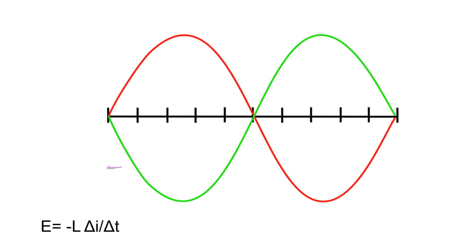Now let's look at what happens when E is at its peak — at its maximum. L is still 300 millihenries; it didn't change. For E to be at its maximum, ΔI/ΔT must be at its maximum. And we know that ΔI/ΔT is at its maximum only when current is at zero. So we plot that: when voltage is at maximum, current is at zero, crossing that axis. Coming back around again, voltage returns to zero, so rate of change is zero, meaning current is at maximum again. And when voltage hits its maximum in the negative direction, rate of change is maximum, so current must be at its minimum.